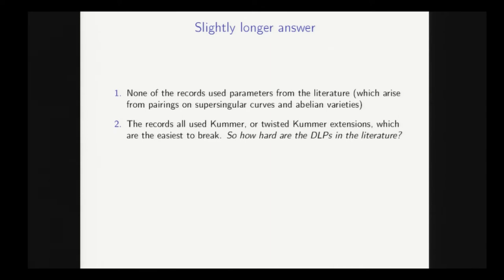A second one is that all the DLP records I showed you use very special extension degrees, namely those which permit a Kummer extension or a twisted Kummer extension. And these are actually the easiest to break relative to fields of the same bit length. That's because you can reduce the size of the factor base, and also the descent becomes easier. So this leaves another question, which is, how hard are the DLPs in the literature? And actually another team of researchers studied this very question.